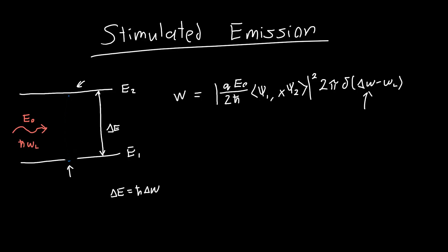But what if our electron started in state two instead of state one? This is perfectly reasonable — we'll often have electrons in our conduction band, which we can think of as analogous to E2. If we apply an electric field, and do all the same math as before but swap c1 and c2, we get the same exact answer. There's a slight subtlety because the result will be the complex conjugate, but when you take the magnitude it doesn't matter — it's the same.